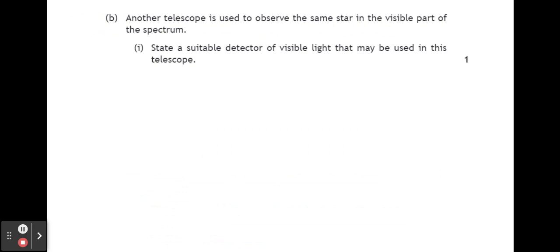Part B, another telescope is used to observe the same star in the visible part of the spectrum. State a suitable detector of visible light that may be used in this telescope. So the detector is the thing that picks up the light signal and allows it to be processed.